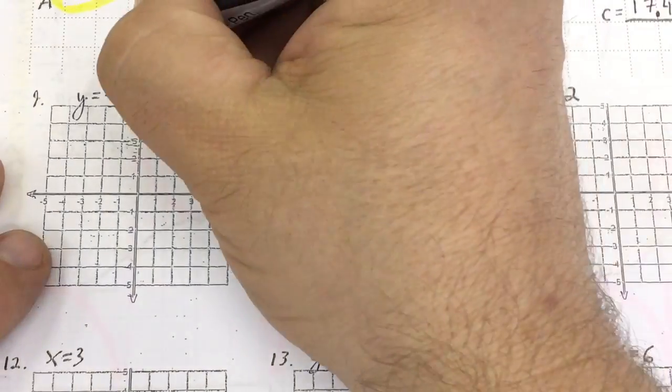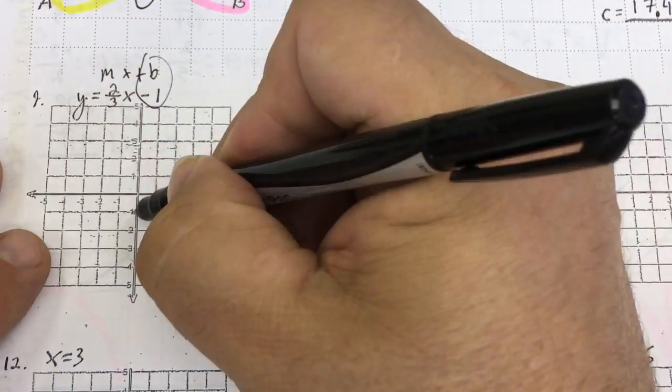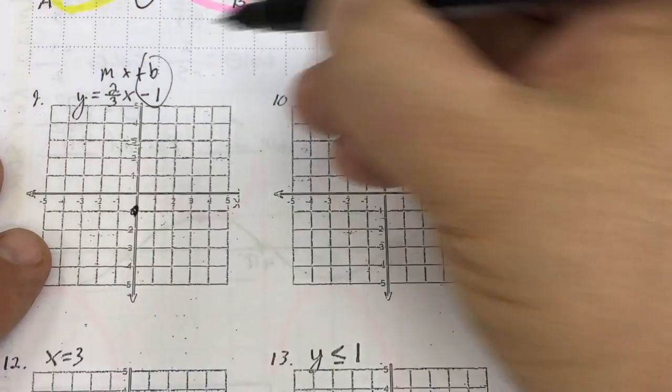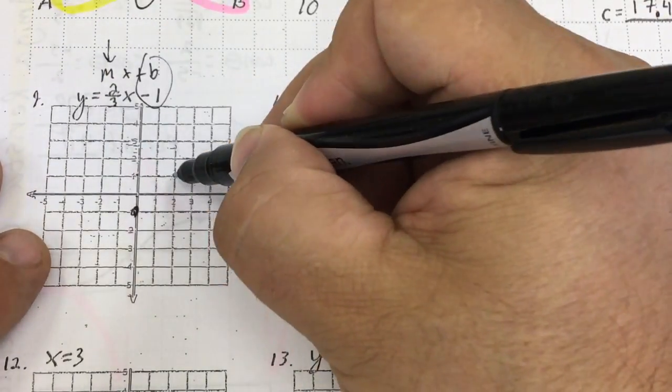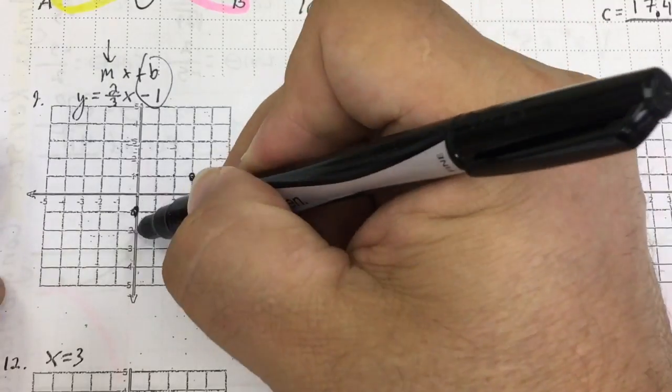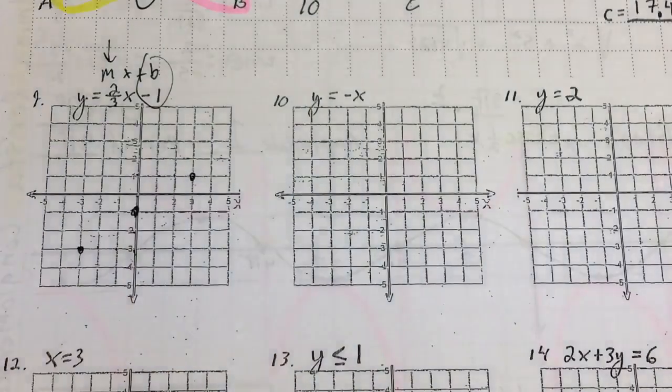Graphic: y equals mx plus b. I begin at negative 1. From there, I use my slope — I go up 2, right 3. And then I connect the dots.